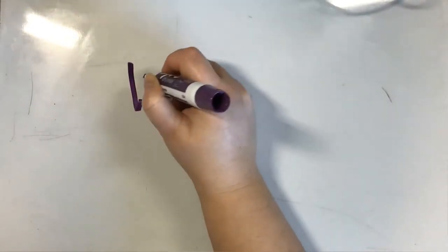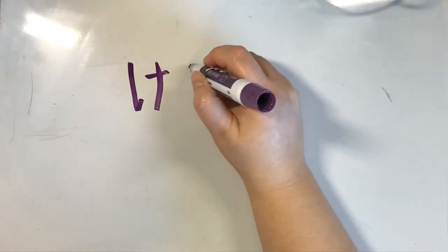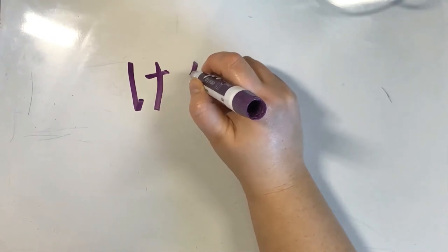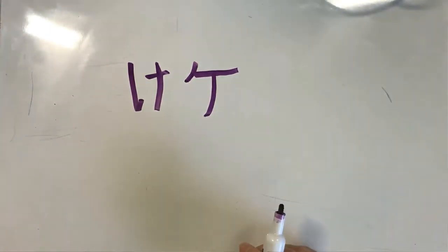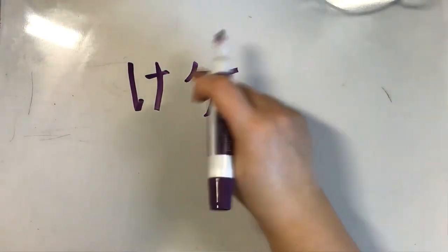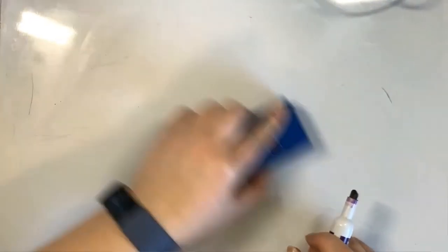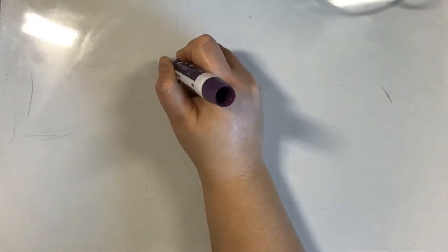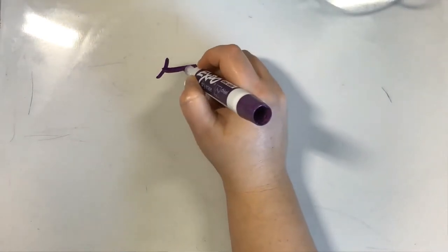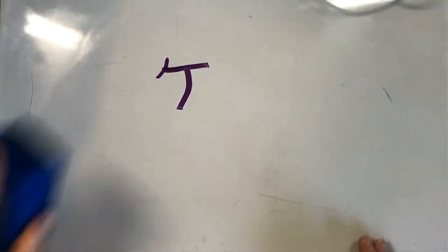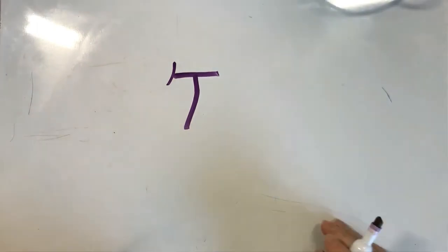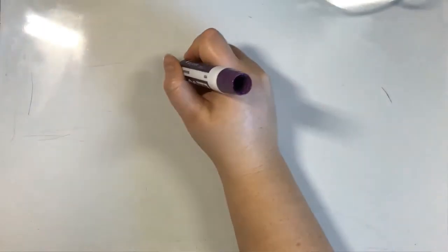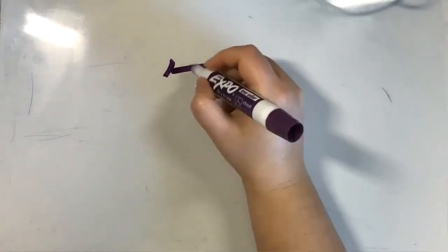The next one is 'ke'. Here's what hiragana ke looks like, and here's katakana ke. You start with a small line going down, then left to right across, then straight going down. It looks like a capital T with a little tick on the side. So: small tick, a line going across, and a line going down on an angle. That is 'ke'.